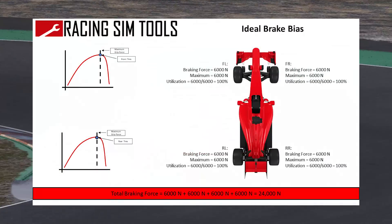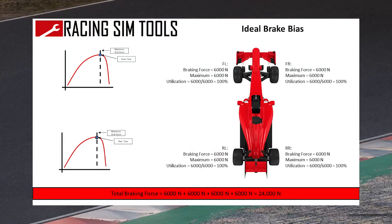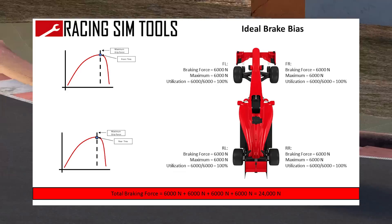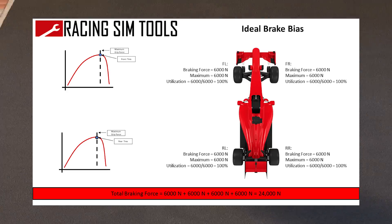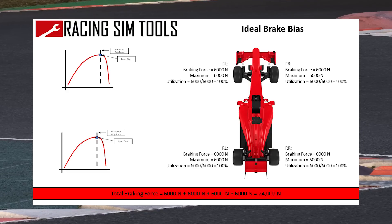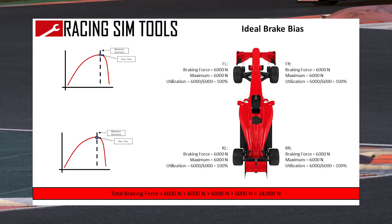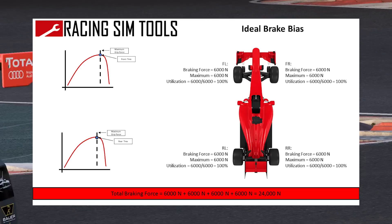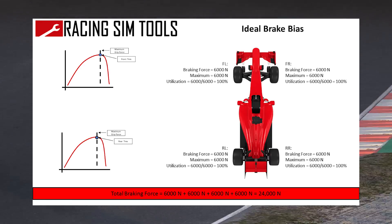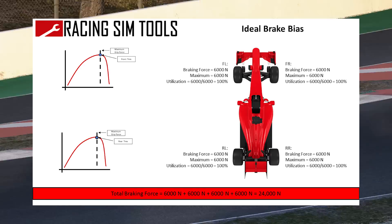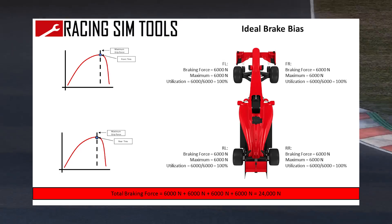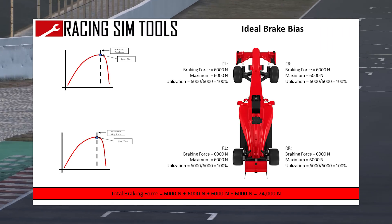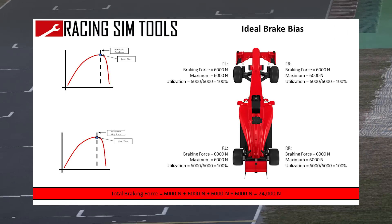Over the second slide, we're going to be considering what the ideal brake bias looks like. If we have tires that have a maximum grip force of 6,000 newtons, and we have a perfectly set up brake bias — meaning that we see the same brake force on the front and the rear — we can see that we're seeing 6,000 newtons of brake force. So our utilization is 6,000 over 6,000, or 100%.